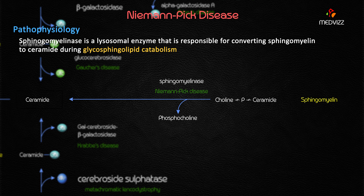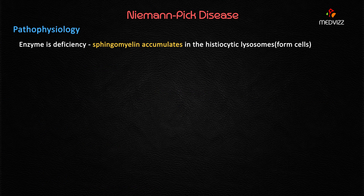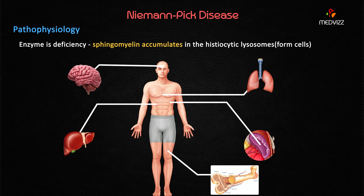Ceramide is a free fatty acid produced during glycosphingolipid catabolism. When sphingomyelinase is deficient, sphingomyelin accumulates in the histiocytic lysosomes — that is, the lysosomes of histiocytes, which are macrophages of the connective tissue. These foam cells accumulate in the brain, liver, spleen, and bone marrow.